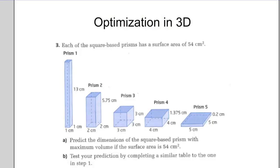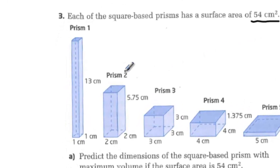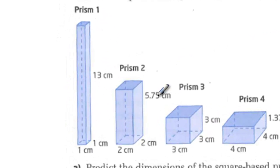In this video, we'll be looking at optimizing shapes in three dimensions. You can see in front of you I've created a picture with several different prisms. All of the prisms have the same surface area, 54 centimeters squared, but they're all different dimensions.